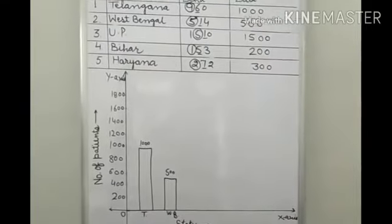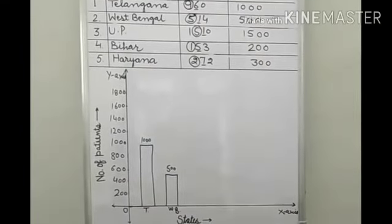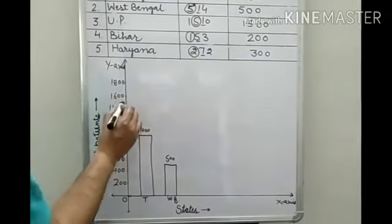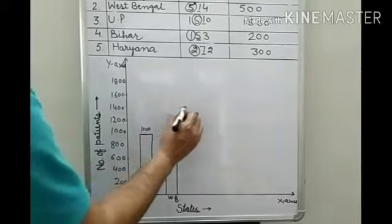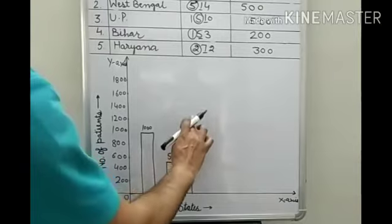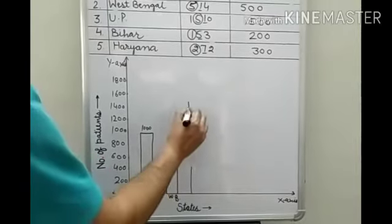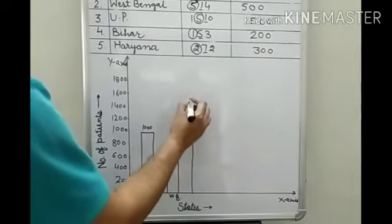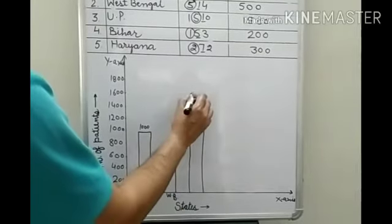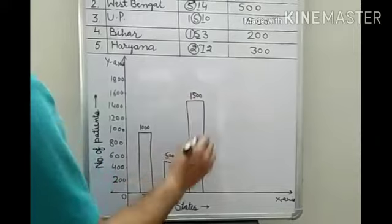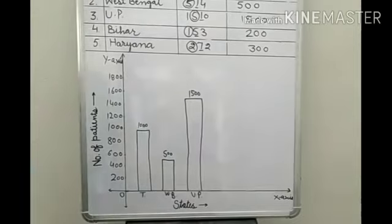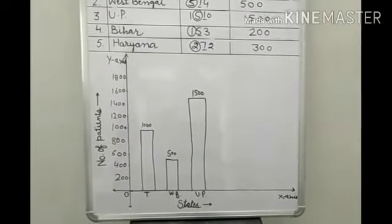Next, you have to represent for Uttar Pradesh. And corresponding to this state, there are 1500 patients. So 1500 like to be 400 and 600. So near above this. Here you will write 1500 and here you write Uttar Pradesh. The width of the bar should be same. If you draw with scale, that will be proper.